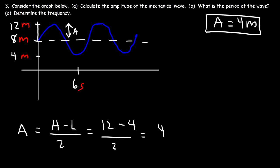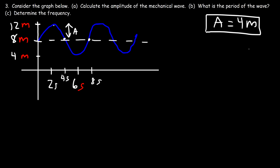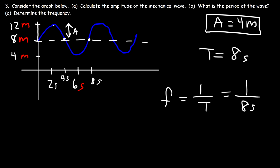What is the period of this particular wave? Notice that 6 seconds corresponds to three-quarters of a cycle. If we divide it into 3, then 6 divided by 3 is 2, so the quarter cycle is at 2 seconds, the half cycle at 4, and a full cycle is 8 seconds. Therefore the period is 8 seconds. The frequency is 1 over the period, so that's 1 over 8, giving us a frequency of 0.125 hertz.